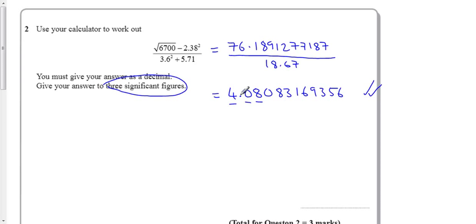Zeros in the middle count but if they were at the front they wouldn't. So all I want, check my rounding, 4.08 and I'm finished.